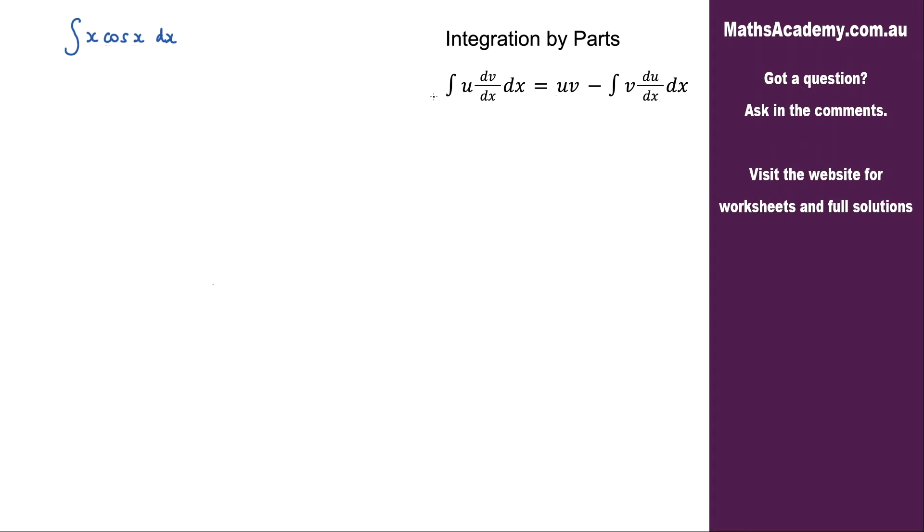Now the first thing we need to do is to assign the u term and the dv by dx term. As you may know there are some rules out there that you can use such as the LIATE rule. Now I am not a fan of those because they do not always work. I think it's much better for you to just get plenty of question practice. So I'm going to erase that because I do not like it.